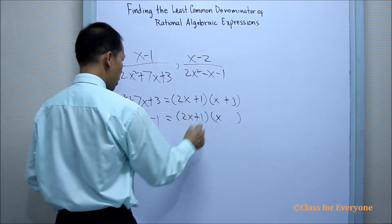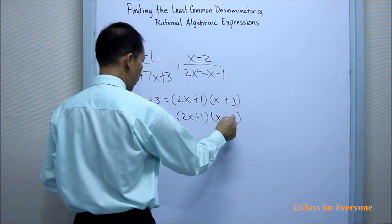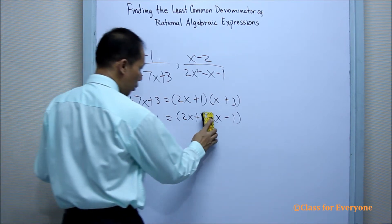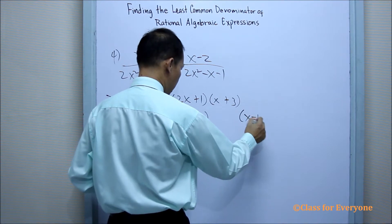So this must be a positive 1. And then we have a negative 1. But this is not the same. So we will not write it on this part. We will write it there: x minus 1.